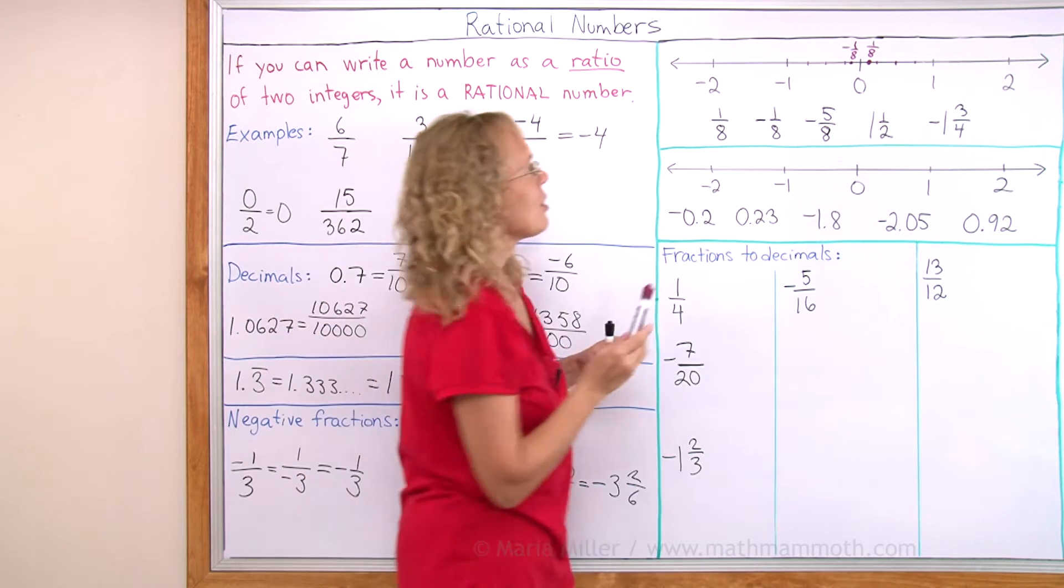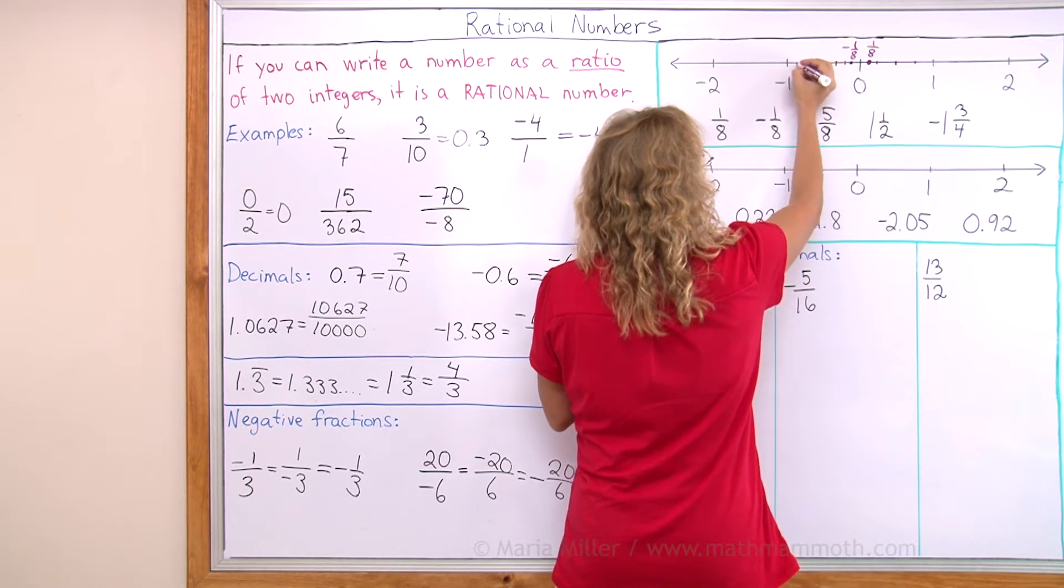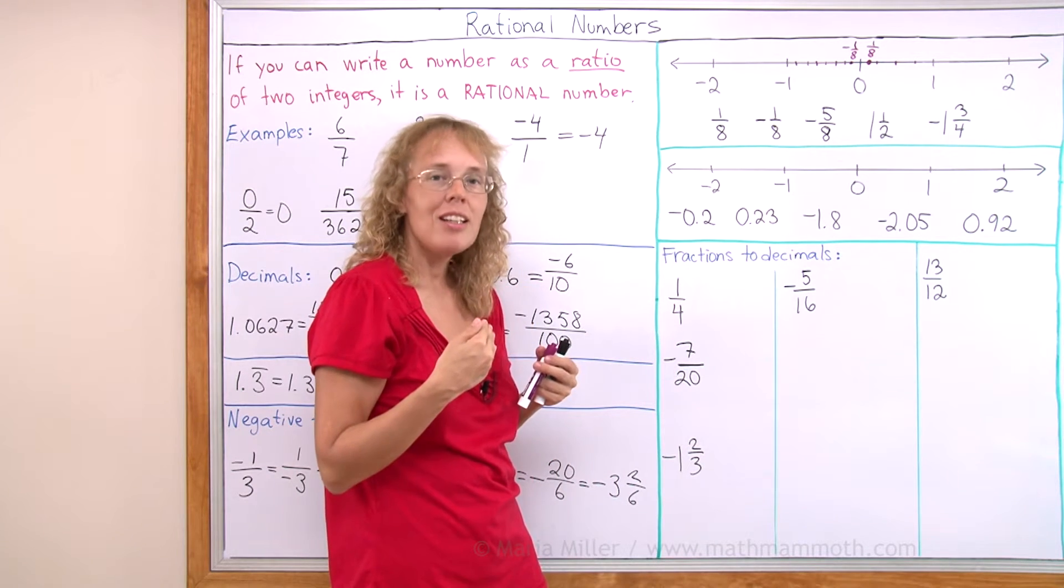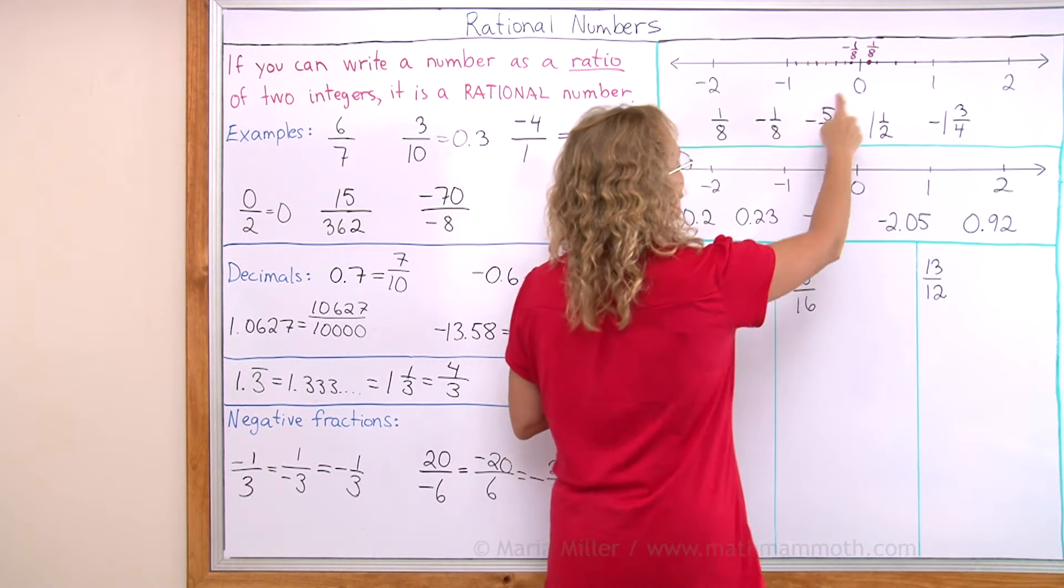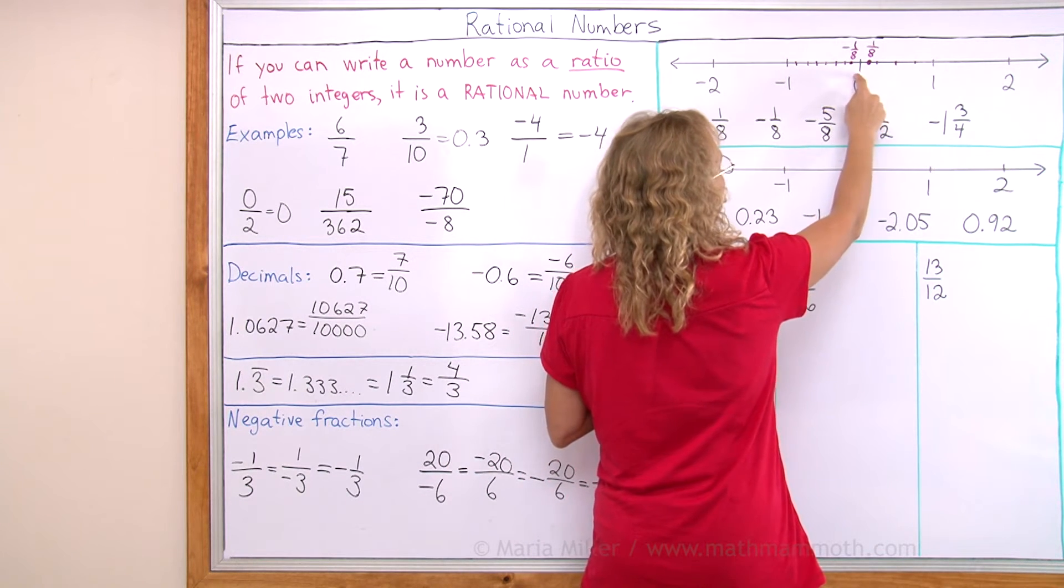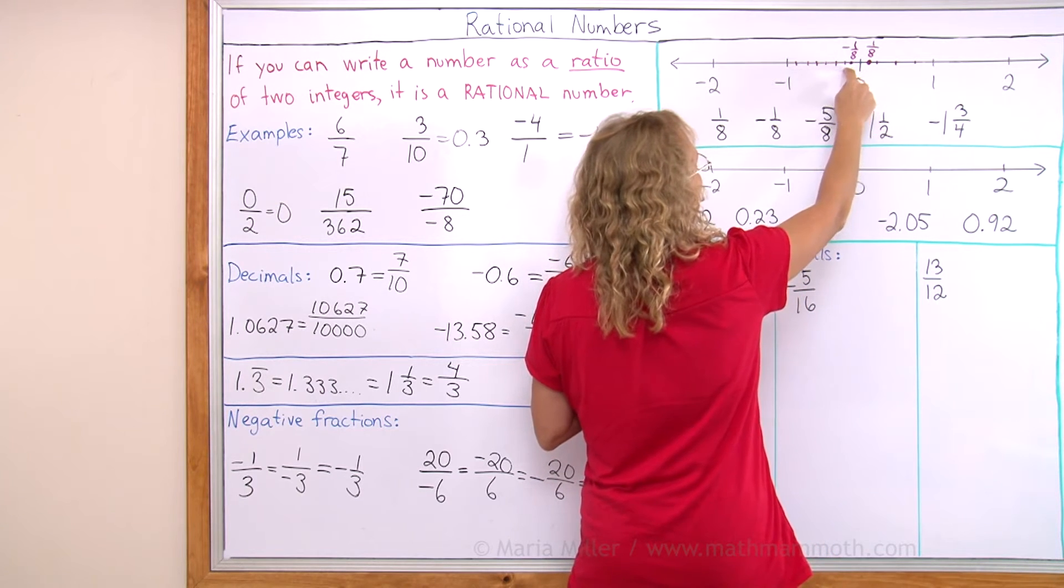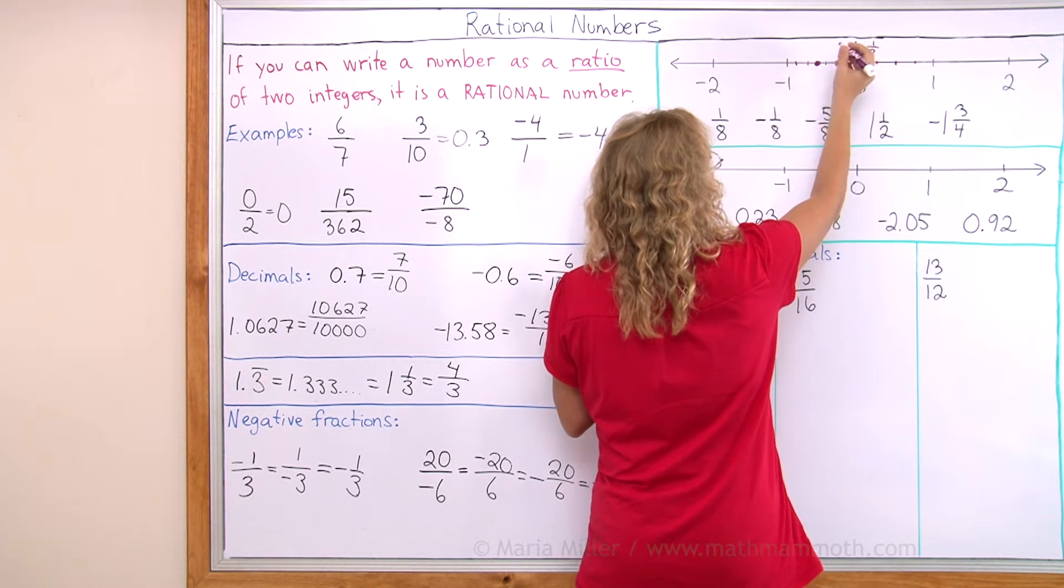Negative 5/8, okay? Let me divide this into eighths now. Now I have divided the interval from 0 to negative 1 into 8 parts, and then I travel to negative 5/8. If I travel to positive 5/8, I go this way. Now I just go this way. 5/8: 1, 2, 3, 4, 5. There would be negative 5/8.